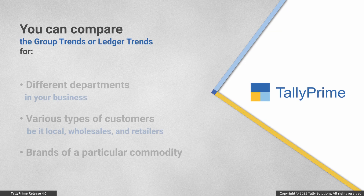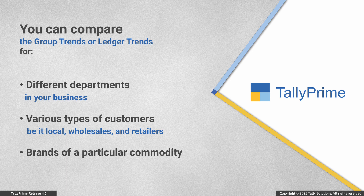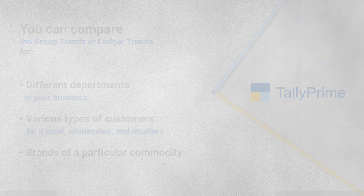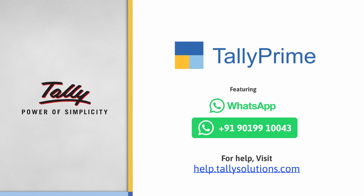You might have created groups or even ledgers for different departments in your business, or different types of customers such as local wholesalers and retailers. You might want to compare the trends. If you have created sales or purchase groups for different brands of a particular commodity or different types of items, you can easily add tiles for each group and analyze your business by comparing the values.